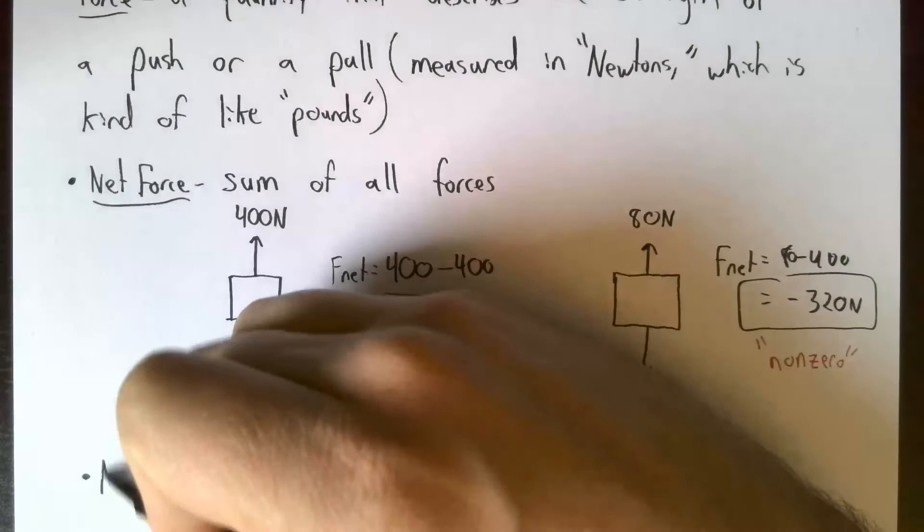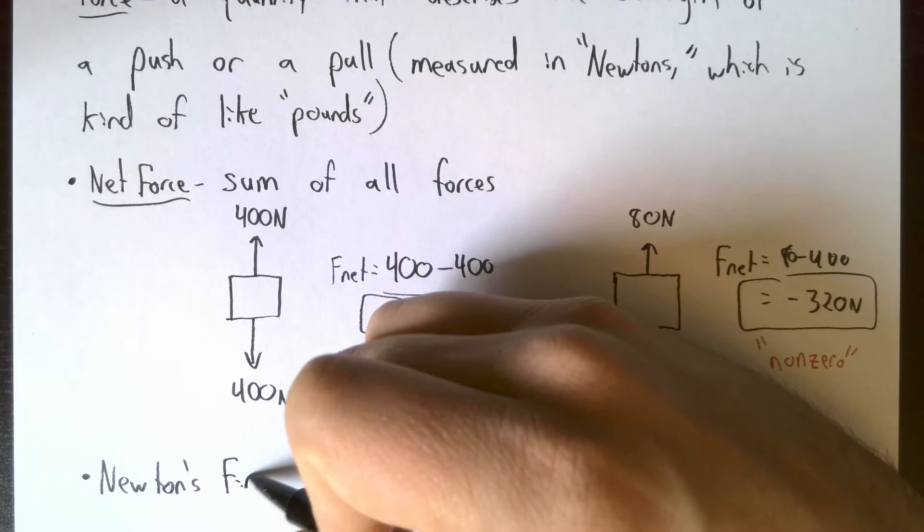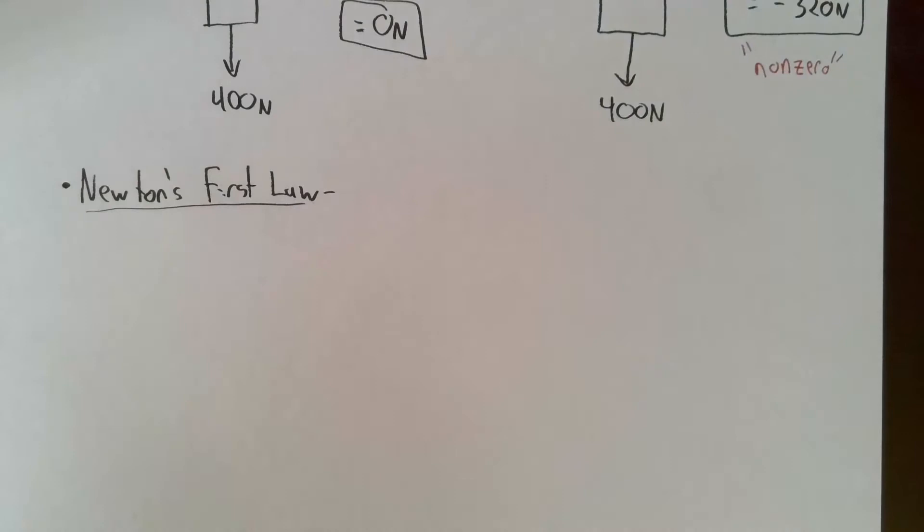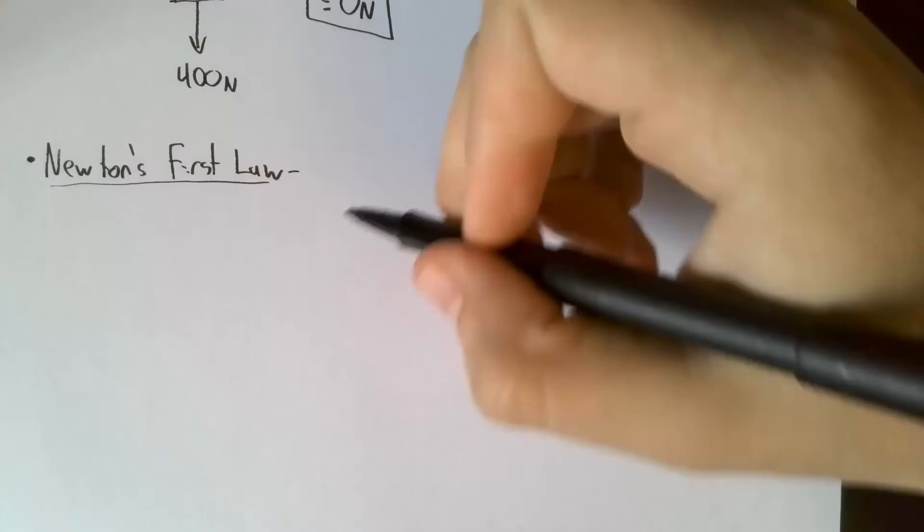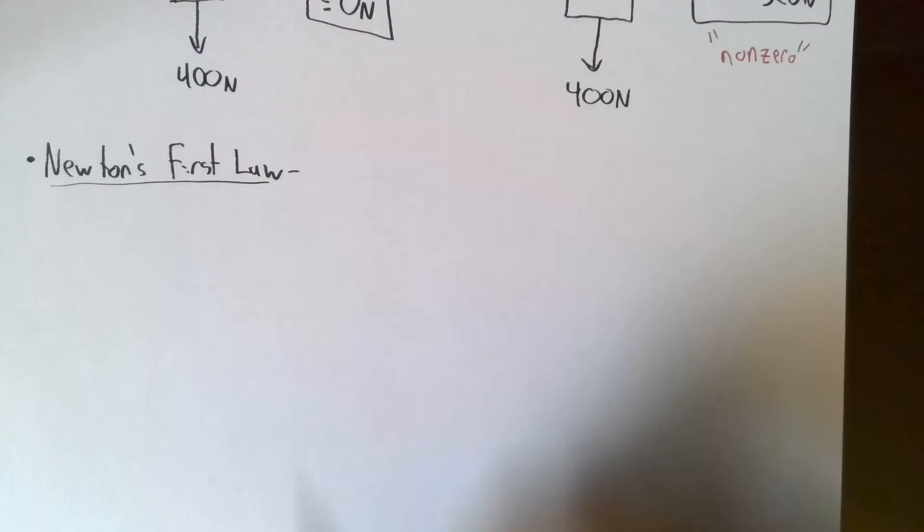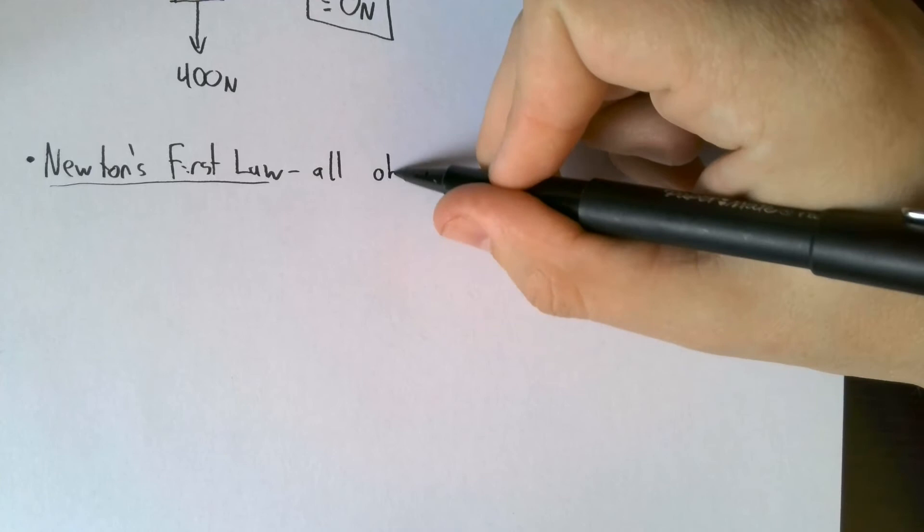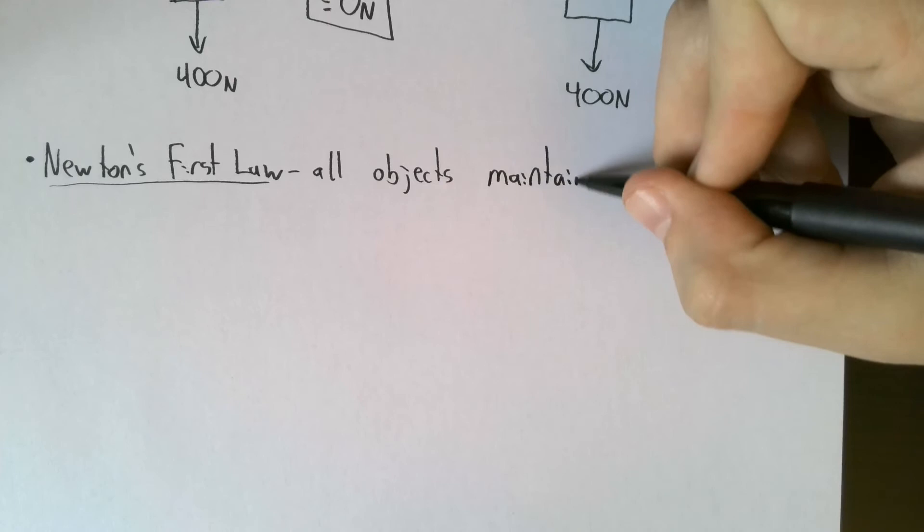But here is the important definition of the day. Newton's first law. Now you probably learned a definition in junior high where they say an object at rest stays at rest, and an object in motion stays in motion, unless acted upon by an unbalanced force. We can say that in a more precise way. Instead of saying an object in motion stays in motion or an object at rest stays at rest, we're going to talk about the velocity. So that we can actually use numbers here. All objects maintain a constant velocity.